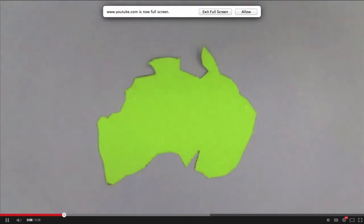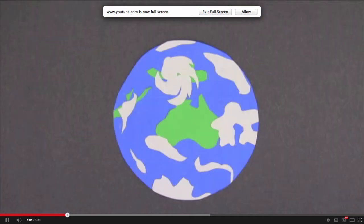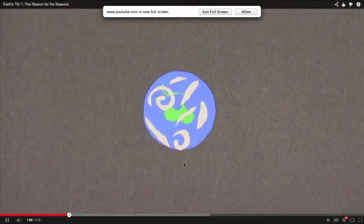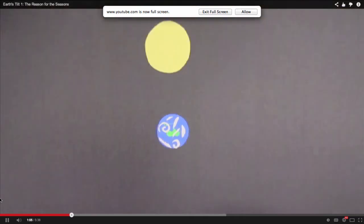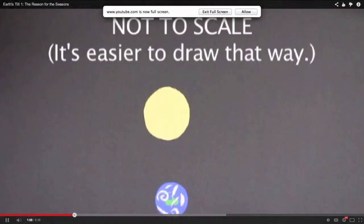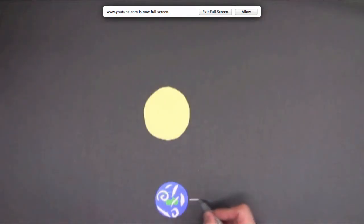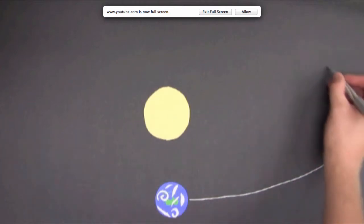To answer this question, we have to zoom way back and start with a top-down look at the earth's orbit around the sun. Oh, by the way, everything you see in this video isn't to the correct scale. Now, the earth's orbit isn't a perfect circle. It's actually an ellipse.